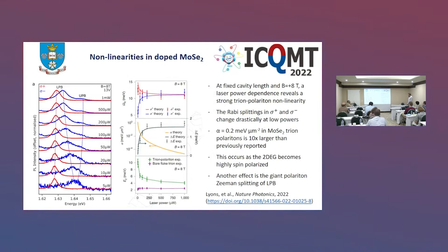What's quite unique about this system is that when we look at the Rabi splitting versus laser power, our highest nonlinearities occur at our lowest laser powers. Looking at the effective interaction strength, we get our largest interaction strength at our lowest powers. This value of 0.2 is actually about 10 times larger than was previously reported in MoSe2 trion polaritons, and this is all thanks to the spin-selective strong coupling.